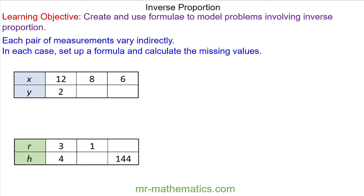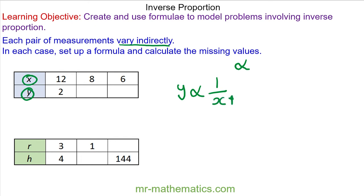Hello and welcome to our lesson on inverse proportion. We're going to model when two units are inversely proportional to each other using the proportionality symbol, which we saw in the previous lesson. In this case, y varies indirectly with x. We write this as y is proportional to one divided by x. This means as x increases, y would decrease — this tells you that they are inversely proportional.